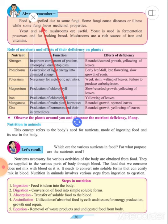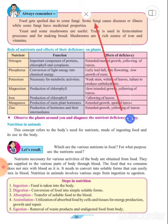Some fungi cause disease or illness while some fungi have medicinal properties. For example, penicillin is used as a medicine all over the world. Yeast and some mushrooms are useful. Yeast is used for fermentation and some mushrooms.